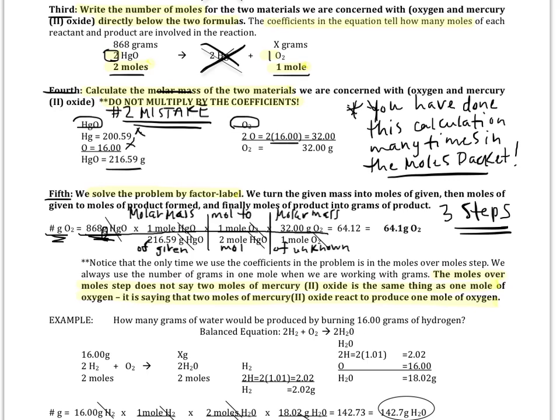Then, we need to set up our factor label. Since we are starting off in grams of mercury oxide, the first step is going to be using the molar mass of the mercury oxide. We're always going to use the molar mass of the given in our first factor label step on this worksheet. We put the moles on top, and we put the grams of mercury oxide on the bottom, so that we can cancel out grams of mercury oxide.